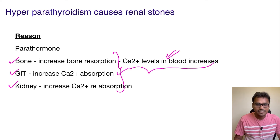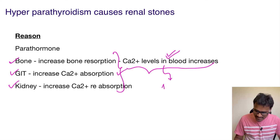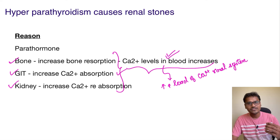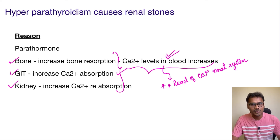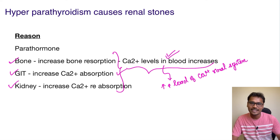But why do renal stones form? When this increased calcium load is present, this calcium will be sent to the kidneys for excretion. There is an increased load of calcium to the renal system, and because of this, there is formation of calcium crystals, which leads to renal stones.